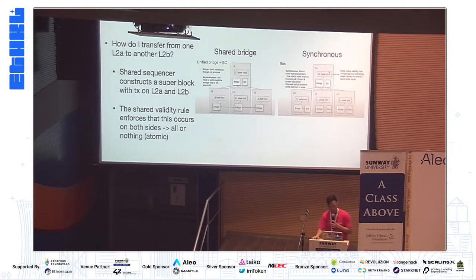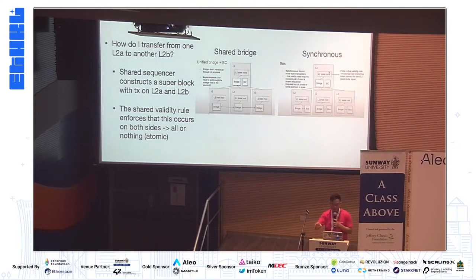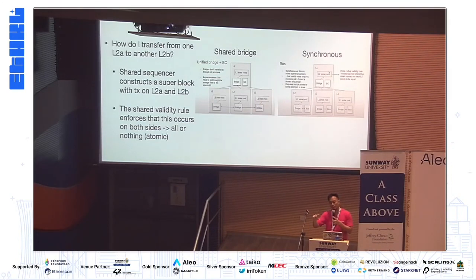This also goes together with the idea of a multi-proof system. Perhaps we could have some blocks proven using validity proofs, and maybe 100 blocks in between use optimistic proofs. So every 100 blocks you have a checkpoint using validity proofs for this infrastructure.